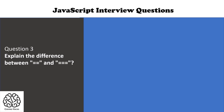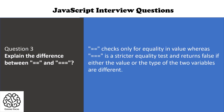Question number three is: what is the difference between double equal to and triple equal to? Double equal to checks only for equality in values, whereas triple equal to checks whether the value or the type of the two variables are equal or not.